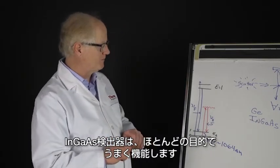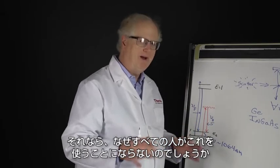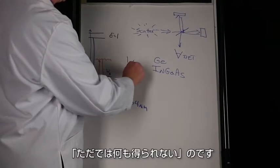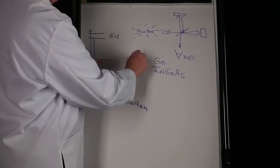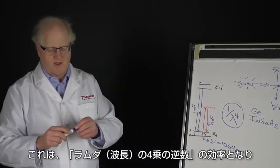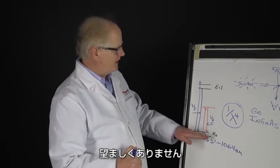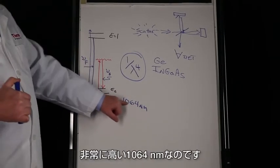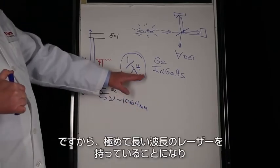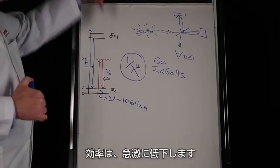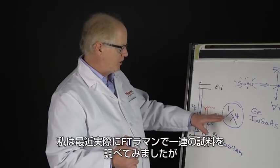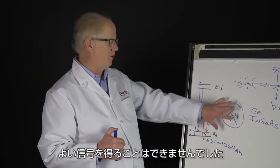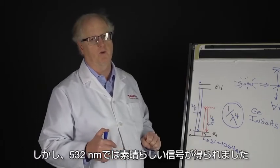So why doesn't everybody do this? It comes back to that big problem: you don't get something for nothing. It's the one over lambda to the fourth efficiency. Yes, you're avoiding fluorescence, but at one over lambda to the fourth where lambda is now way up here at 1064 nanometers. The efficiency drops in a hurry. I've actually had recently a set of samples that we were unable to get good signals for on the FT Raman but got great signals at 532.